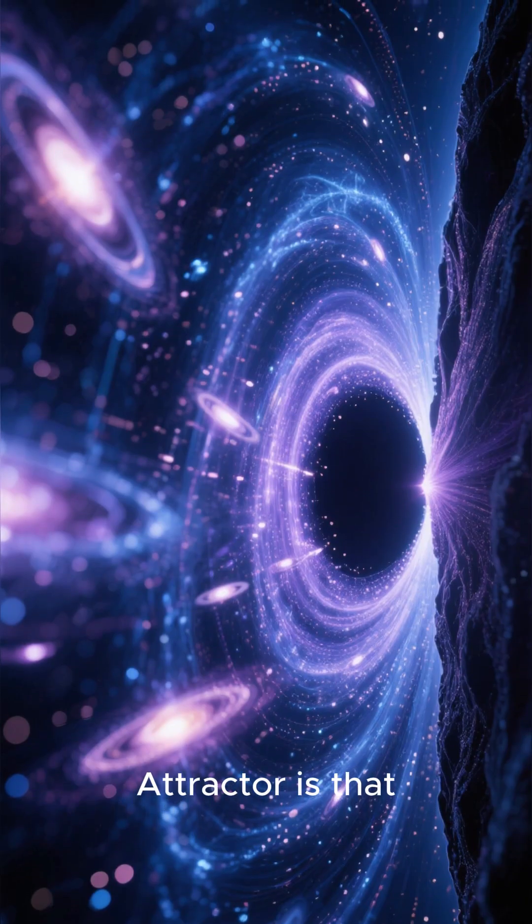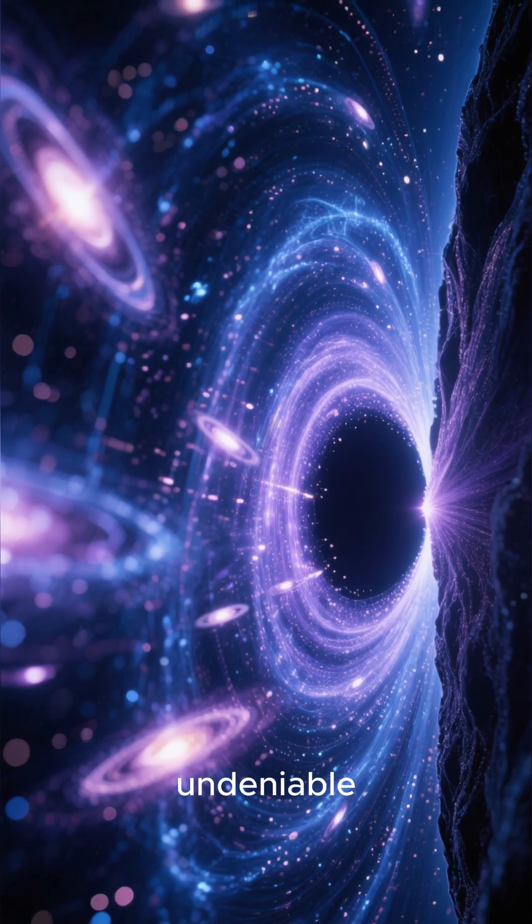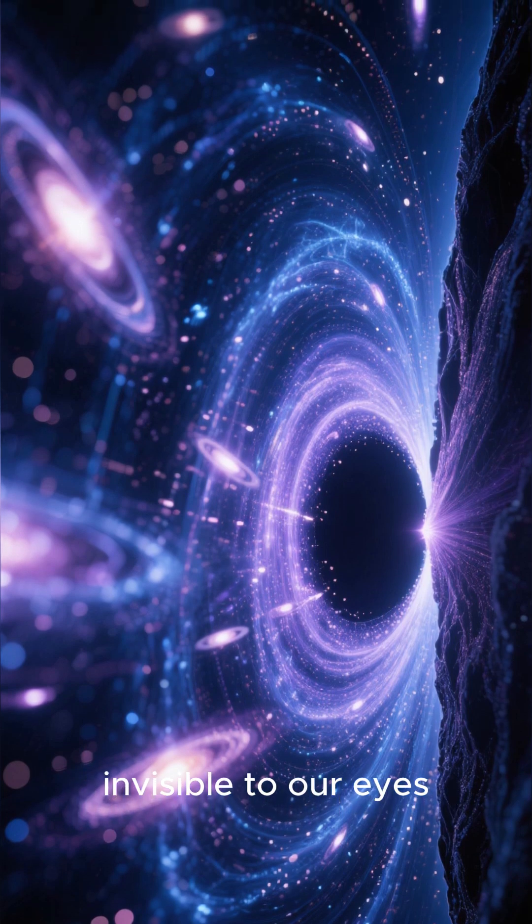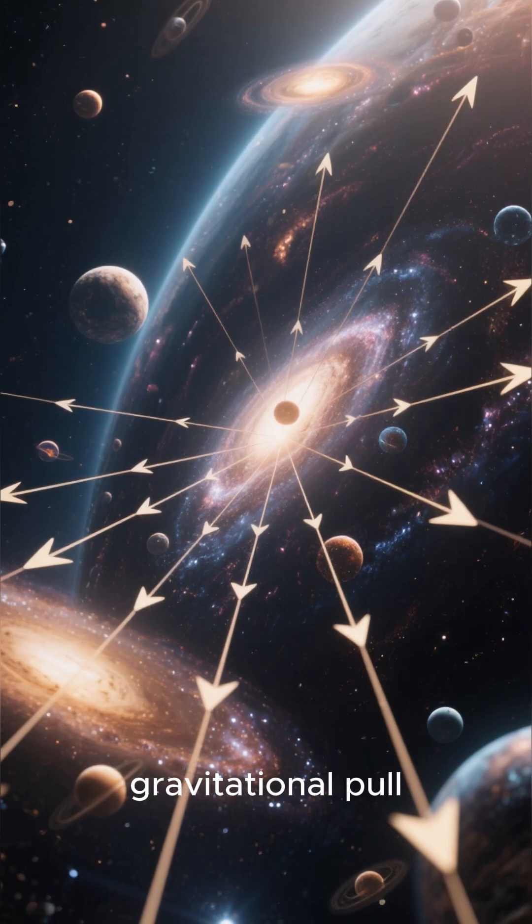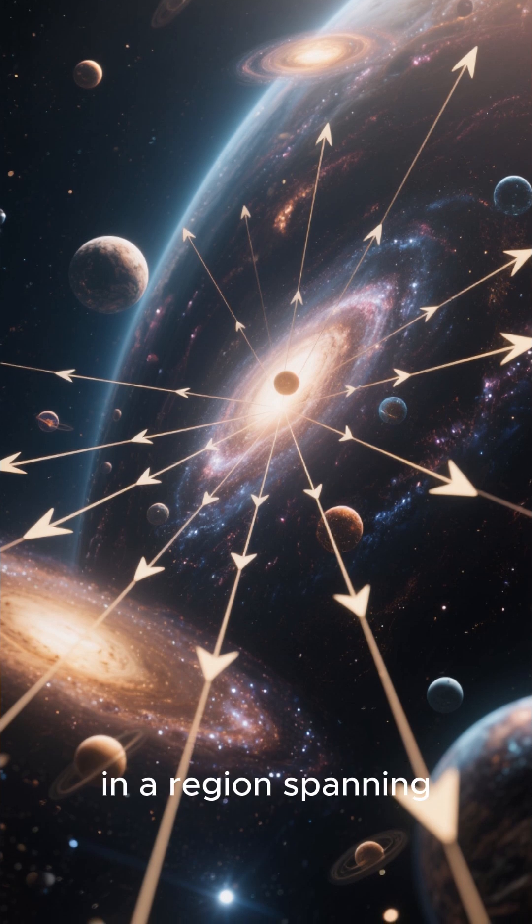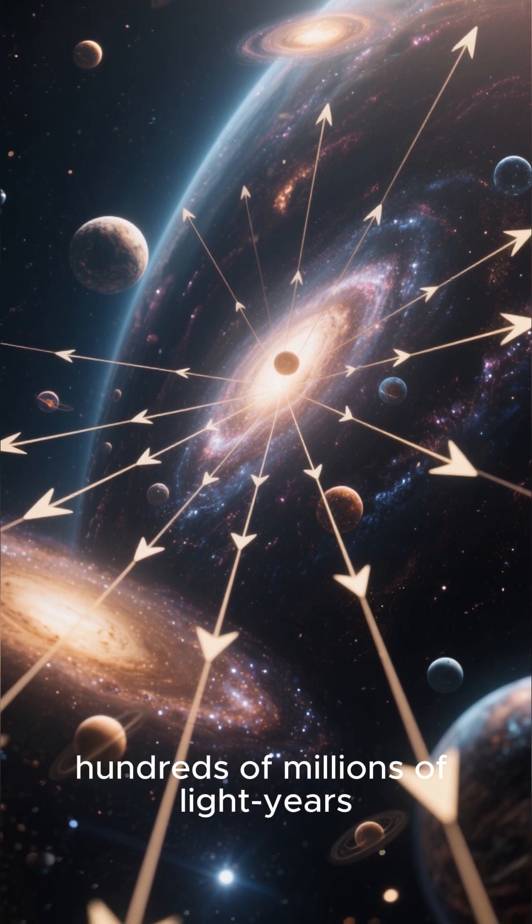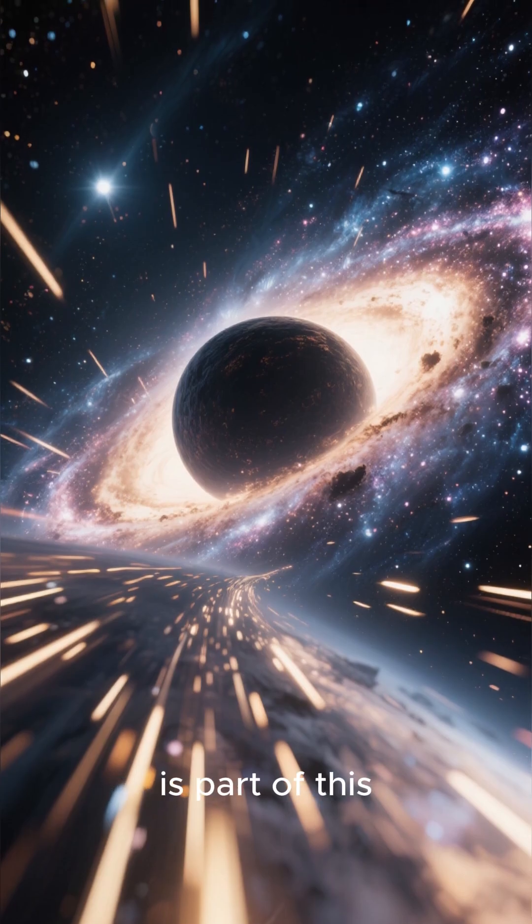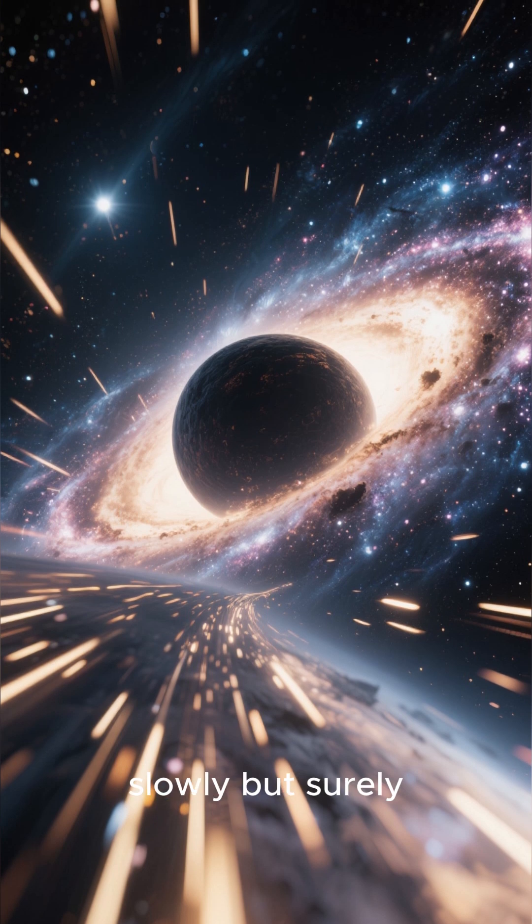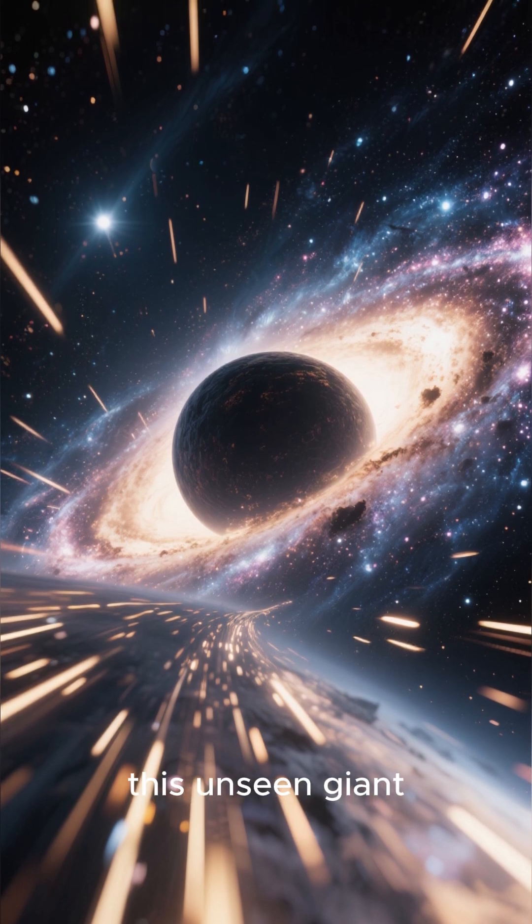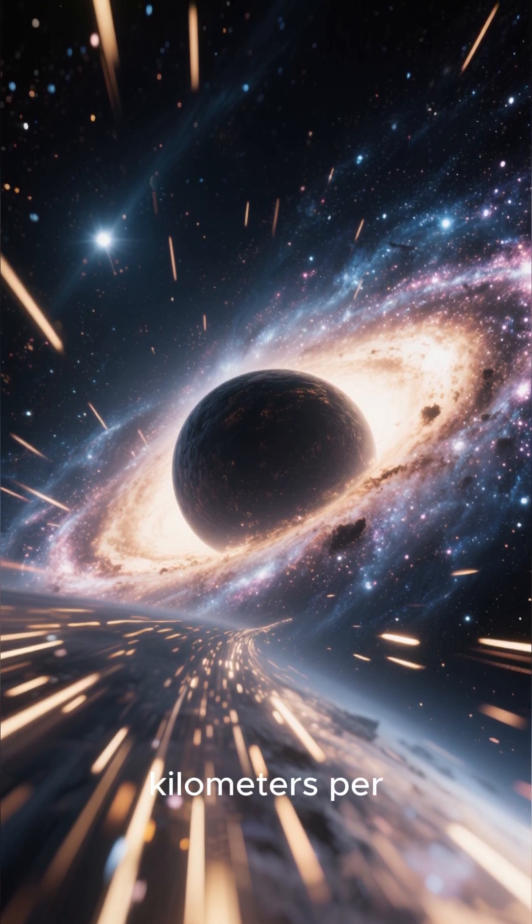The mystery of the great attractor is that while its effects are undeniable, the object itself remains invisible to our eyes. We can measure its immense gravitational pull, which affects thousands of galaxies in a region spanning hundreds of millions of light years. Our own Milky Way is part of this cosmic flow, slowly but surely drifting toward this unseen giant at a staggering 2 million kilometers per hour.